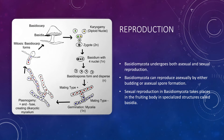Sexual reproduction in Basidiomycota takes place in the fruiting body in specialized structures called basidia. The basidia is itself formed by plasmogamy between mycelia from two different spores. Plasmogamy results in binucleate hyphae — that is, hyphae with two types of nuclei, one from each parent.